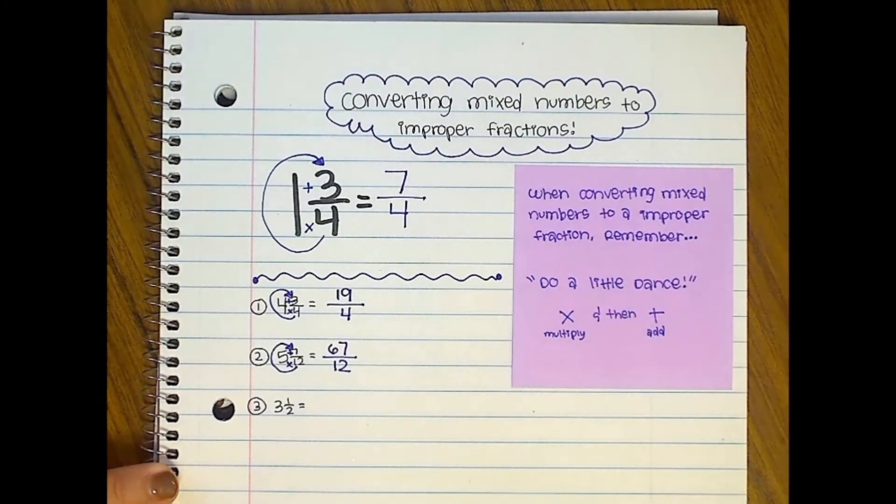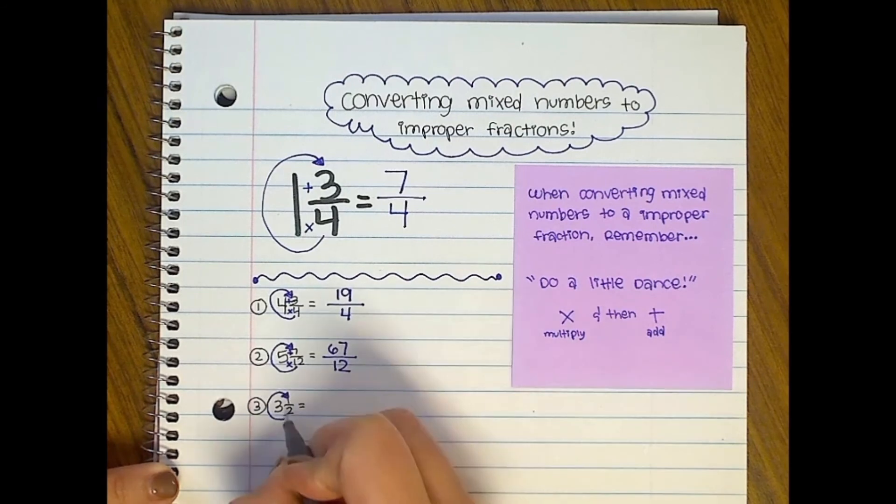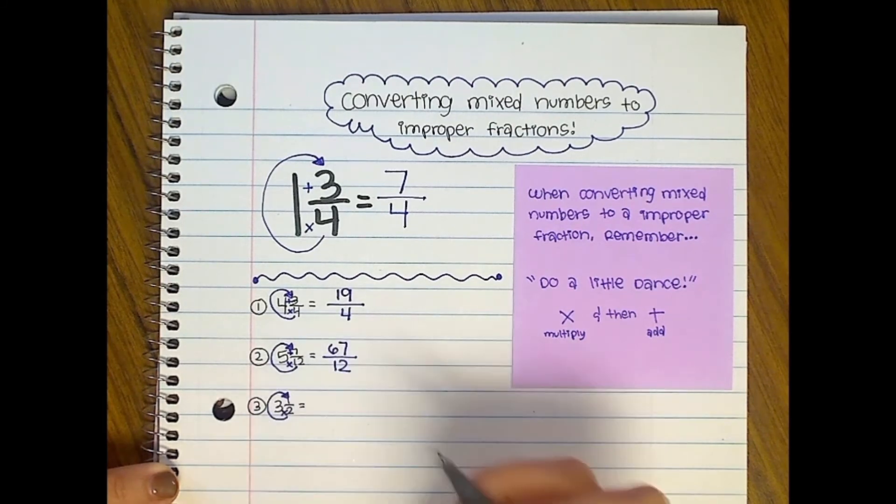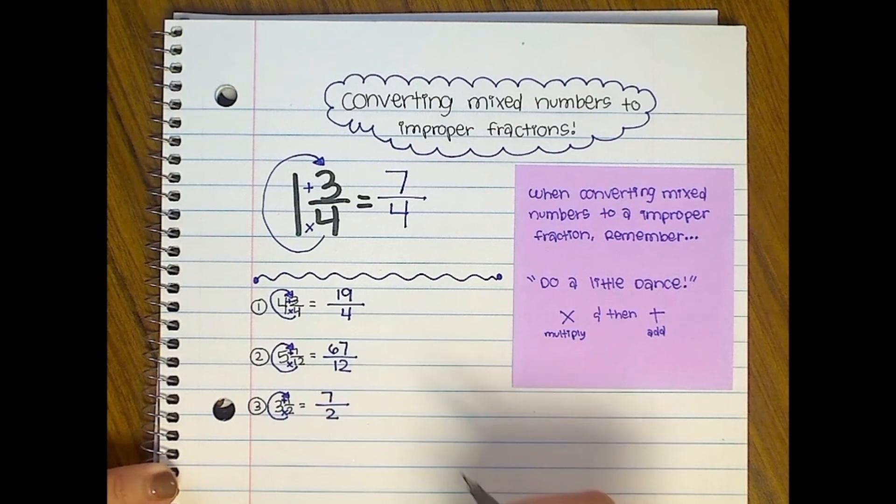Once again, last but not least, do a little dance. And you do two times three, which is six, plus one, which is seven. Then you put that over two because the denominator always stays the same. Hope this helps.